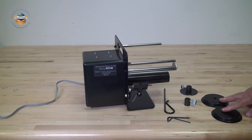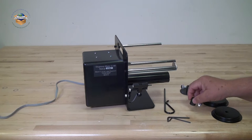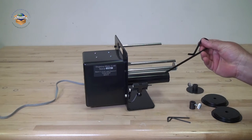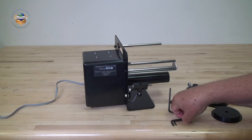You'll get two core holders, a locking collar, a side guide, a spring clip, and a couple of allen wrenches.